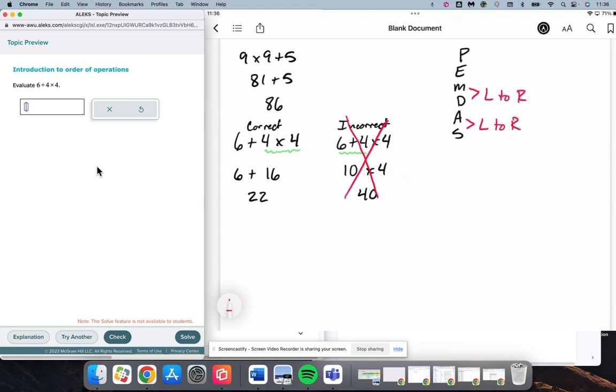It's very important that we always follow the order of operations. Parentheses, then exponents, then multiplication or division from left to right, and addition or subtraction from left to right. Again, that's going to give us 22.